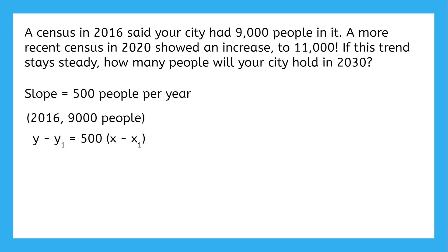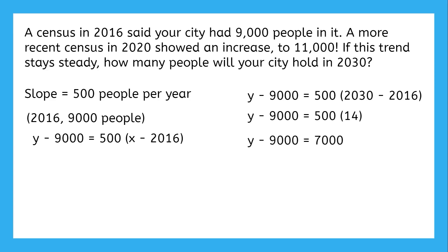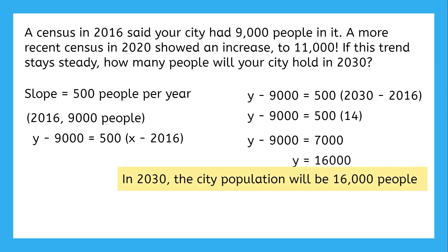So we will get this equation. Now, to solve the problem: what will the city's population be in 2030? We just plug in 2030 for x. 2030 minus 2016 is 14, times 500 is 7,000, and adding 9,000 to both sides gives us that the population will be 16,000 people in the year 2030. If we had used the other point to set up our equation instead, we'd still get this same answer.